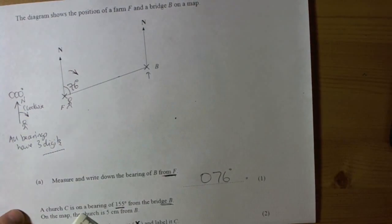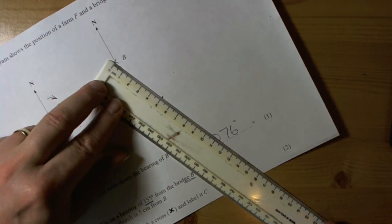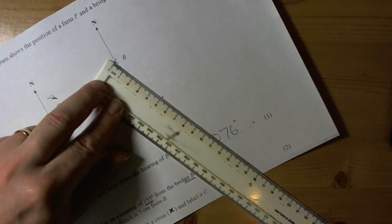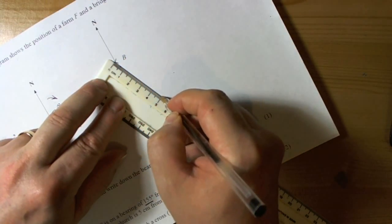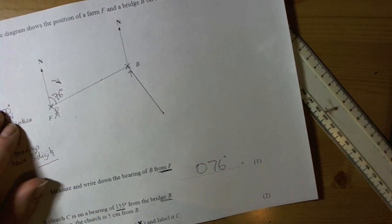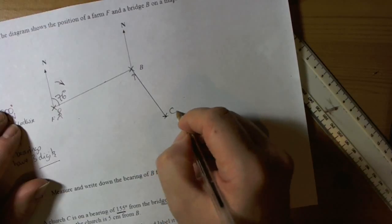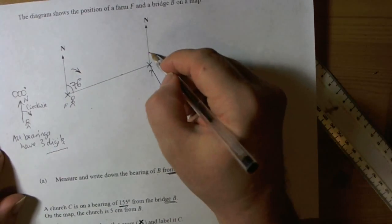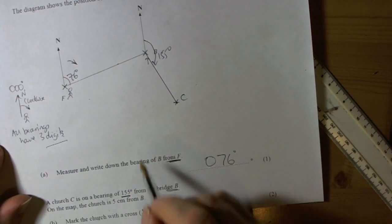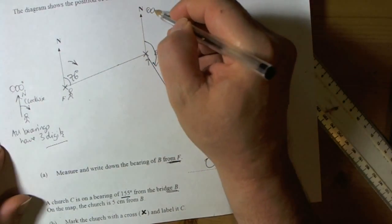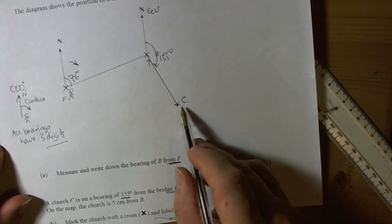And it's telling us that we've got to be five centimetres from B. So we line up our ruler with the angle and we make sure we measure five centimetres accurately. It then says to mark it with a cross. So we've got to be careful that we do what they say and label it C. So we measured an angle of 155 degrees in a clockwise direction from north where north was 000, and then we measured the five centimetres that they asked us to and labelled it with C.